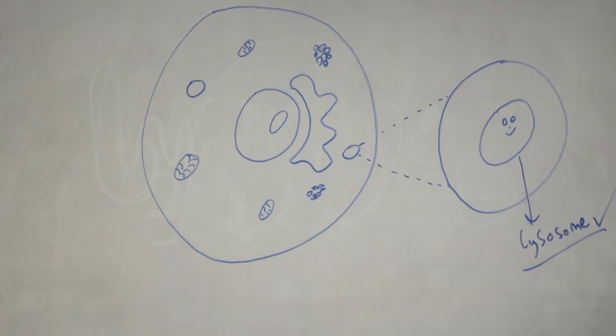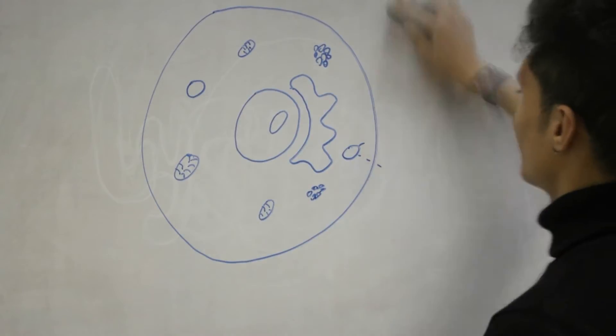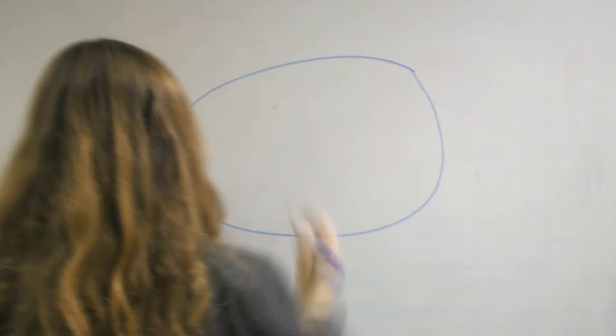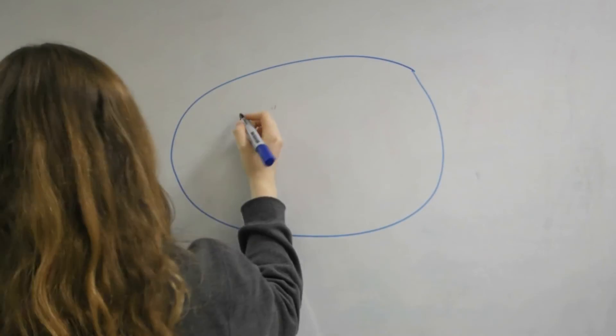From there the lysosomes float around in the cytoplasm until they are needed. The lysosomes are single membrane organelles. They are fairly straightforward organelles in terms of structure and can make up as much as 5% of the intracellular volume.